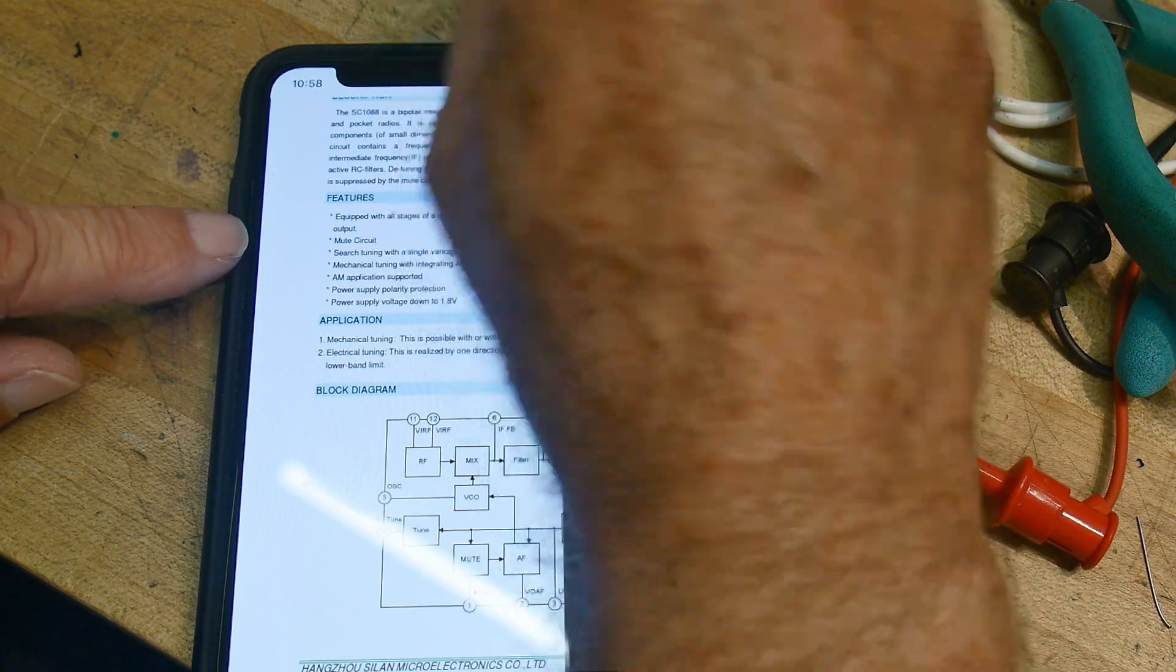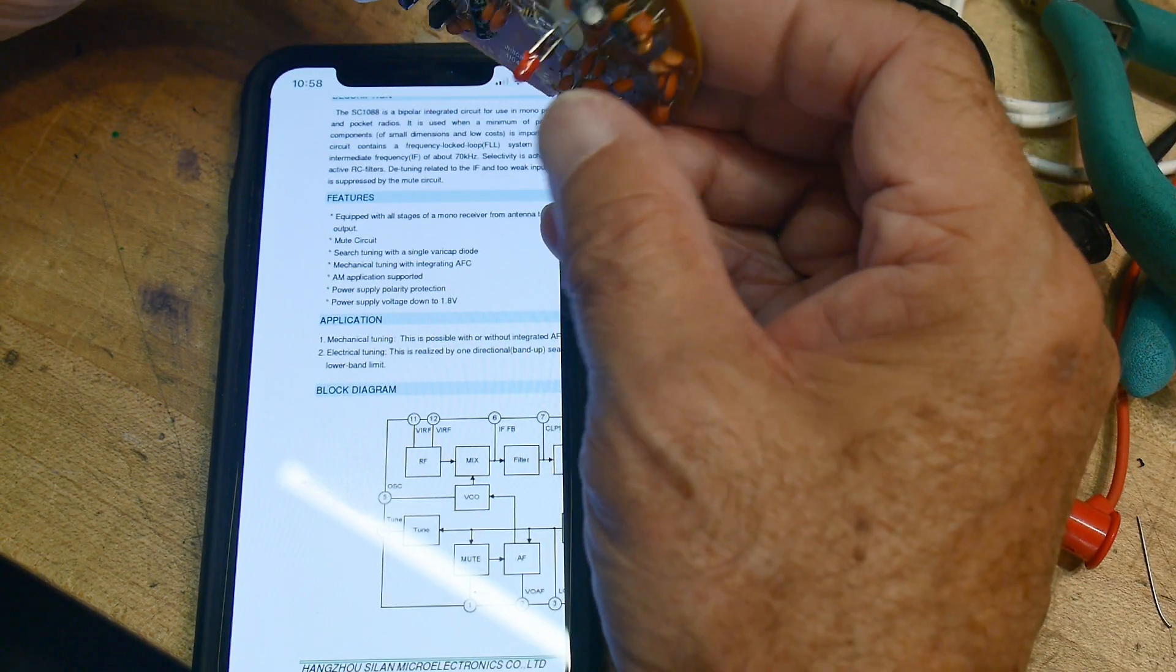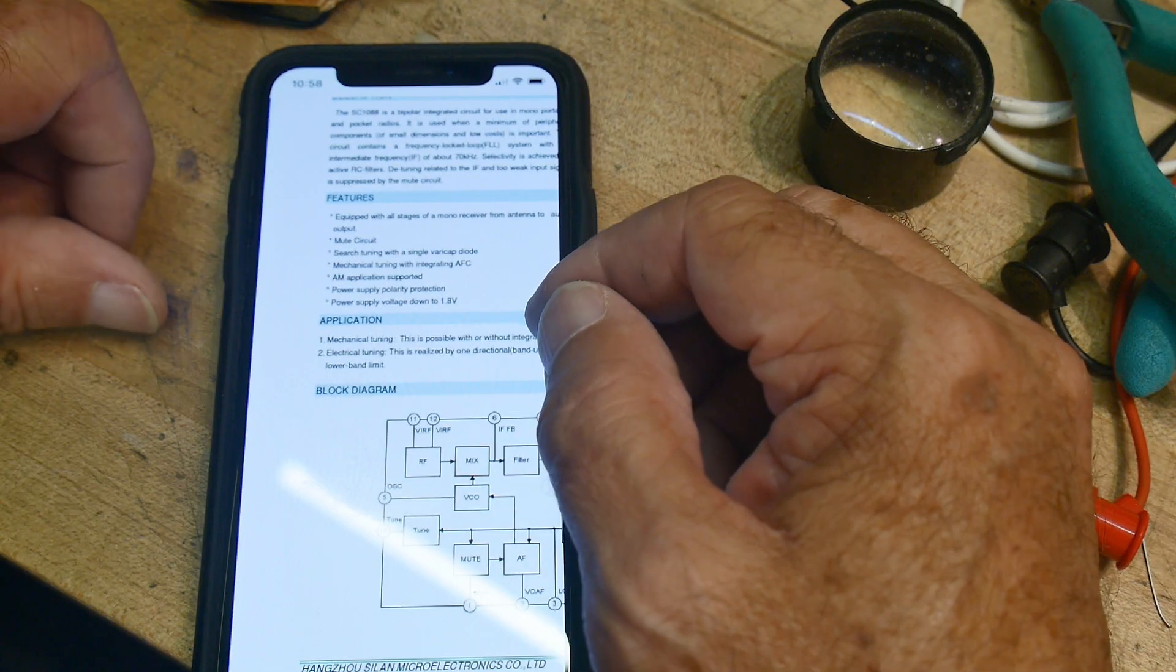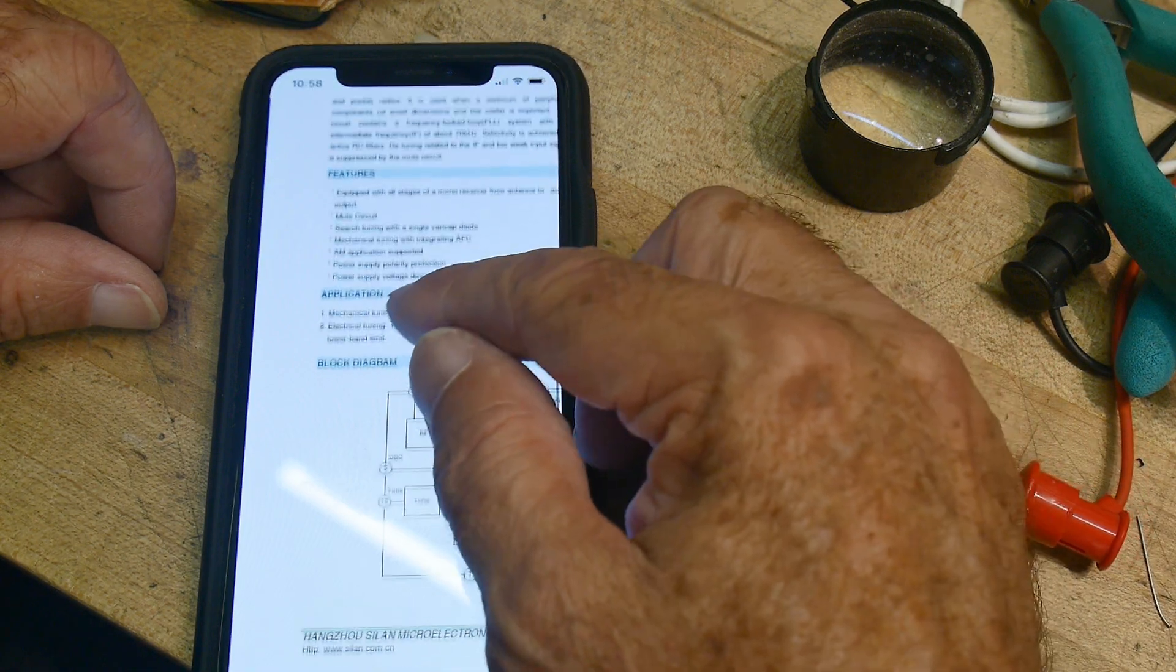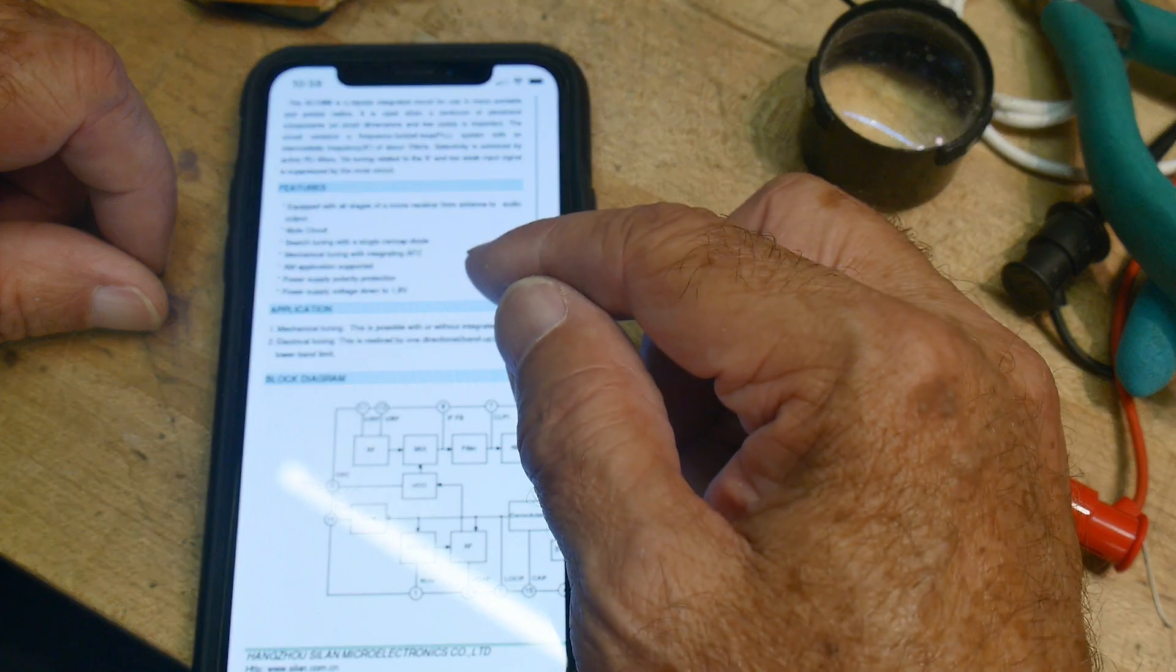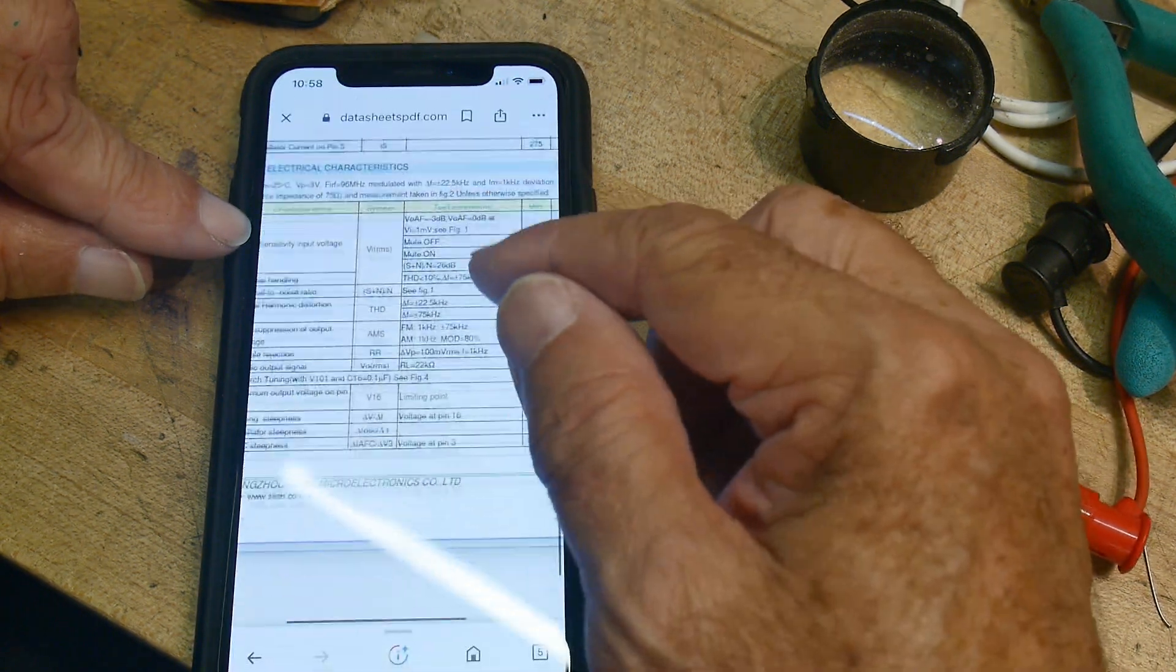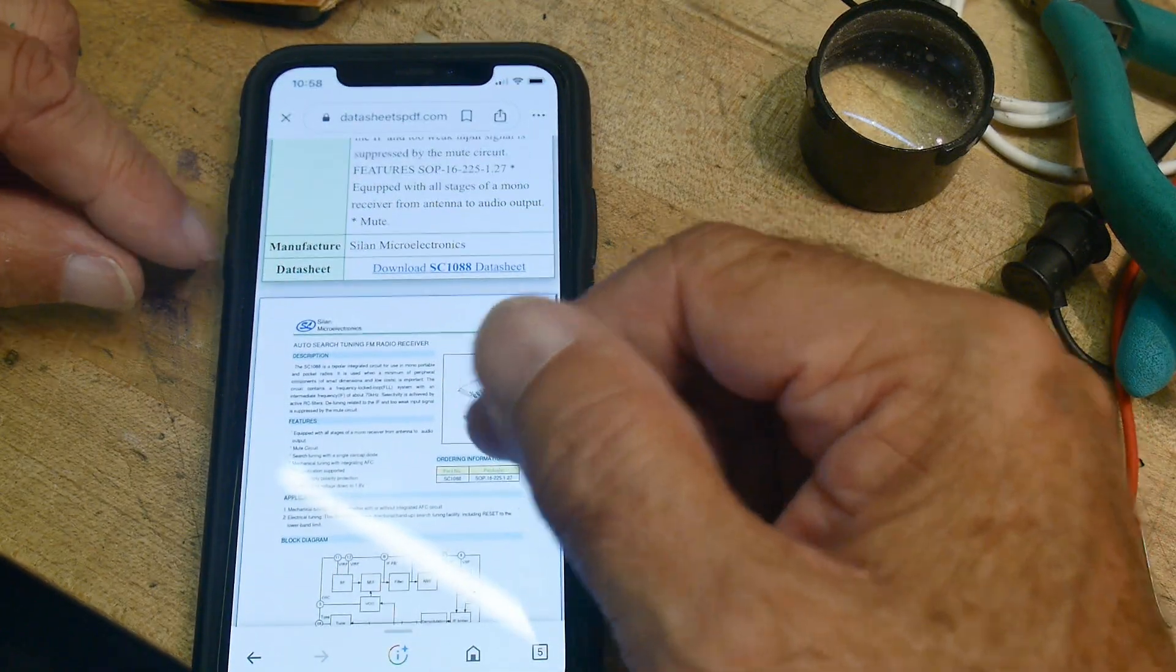Mechanical tuning. Is there a VeriCap diode on this too? Yeah. Right there. That's two VeriCap diodes. One on the other side too. Power supply down to 1.8 volts. AM application supported. It'll do AM and FM. And equipped with all stages of a mono receiver from antenna to audio output. Has a mute circuit. Yeah, there you go. If you want to build a radio, FM radio receiver, real cheesy one, you can put it all on one chip. All right.